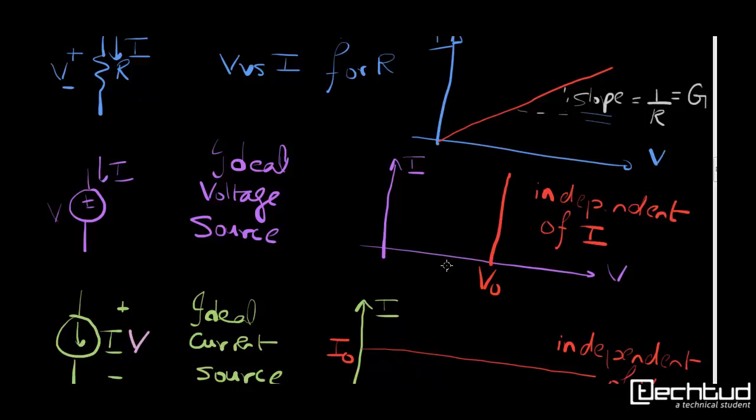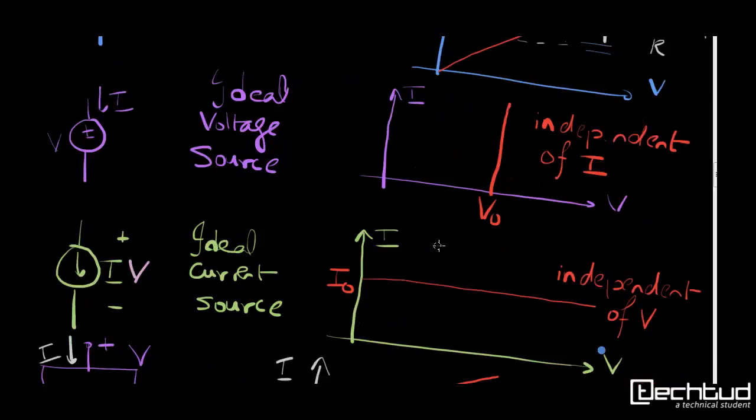For ideal current source, you can have any voltage across it but it should give you a constant current of I0. That is ideal current source.